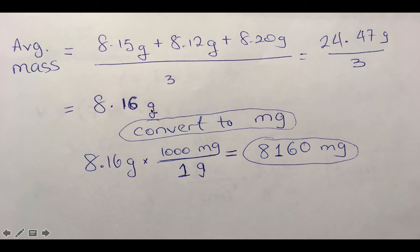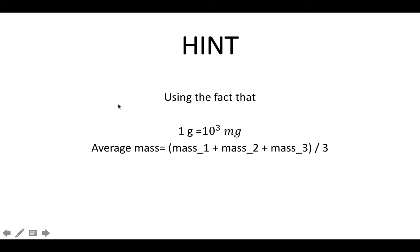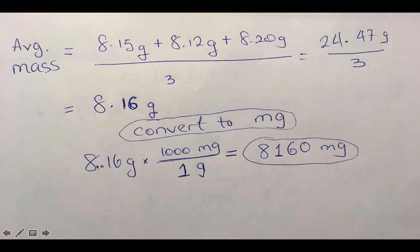You have the mass in grams but they want the answer in milligrams, so the goal is to convert your answer to milligrams using this fact. Once you have your answer, all you have to simply do is multiply by a thousand because one gram equals a thousand milligrams. I love to set it up like this so that this can cancel out and all you are left with is the unit in mg. You have 8160 milligrams as your final answer.